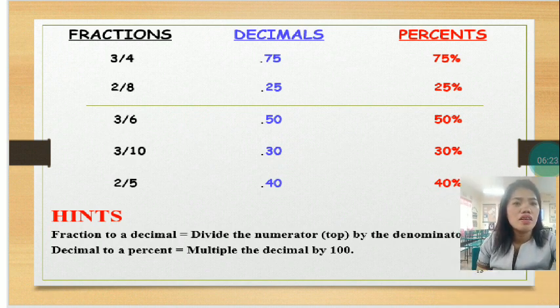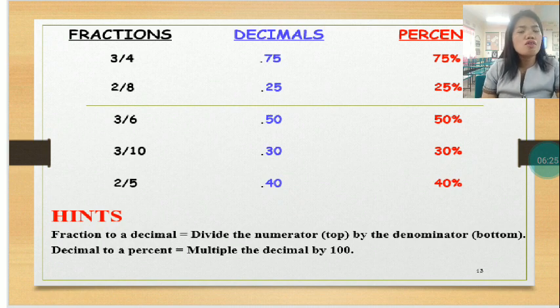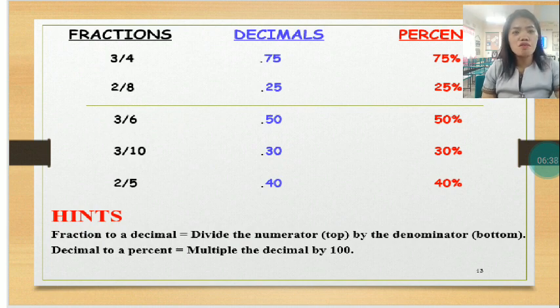There's a hint. Fraction to a decimal: divide the numerator, the top, by the denominator, which is the bottom. From decimal to a percent, just multiply the decimal by 100.